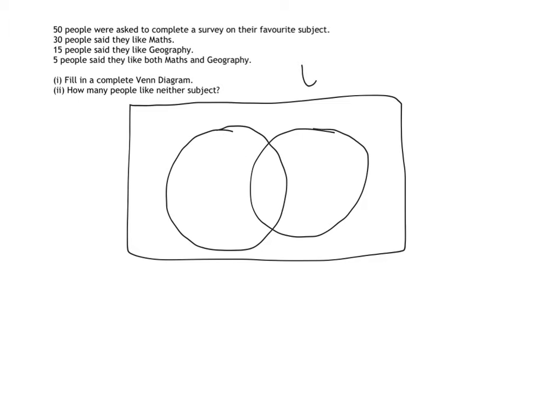The first thing I'm going to do is say, I know my universe equals 50 people, and this first circle I'm going to say is my maths circle, so I'll label that with M, and in brackets I'm going to put in 30. We're told that 15 people like geography, so I'm going to do G, and in brackets I'm going to do 15.